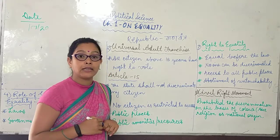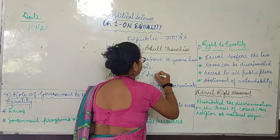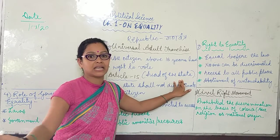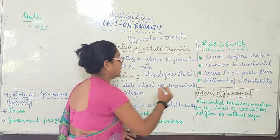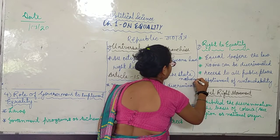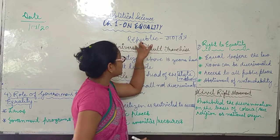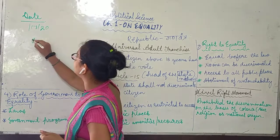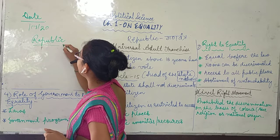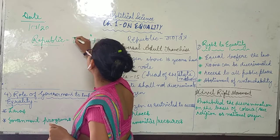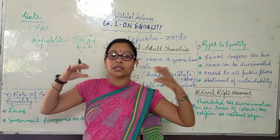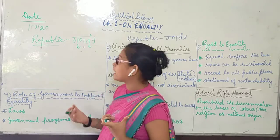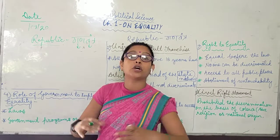Here, 'state' means the nation, not a state like Uttarakhand or Uttar Pradesh. The word 'republic' in Hindi is Gantantra — 'gan' means the people and 'tantra' means the system. So republic means a system where the head of the state is elected by the ordinary citizens of the country.